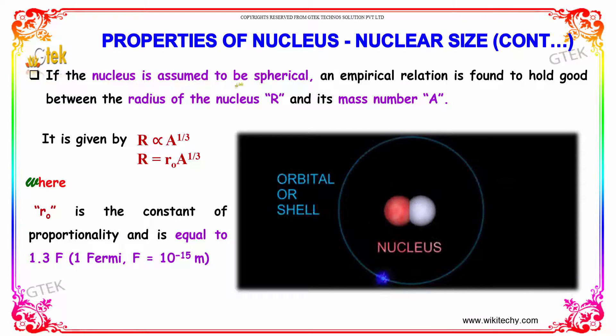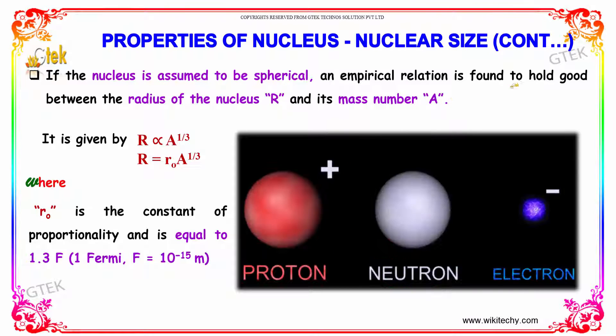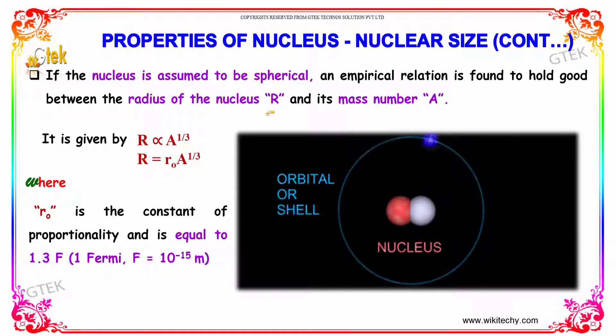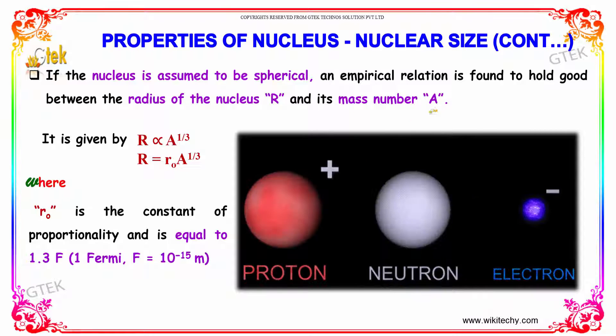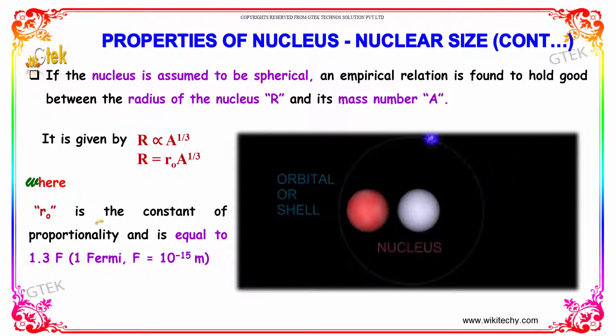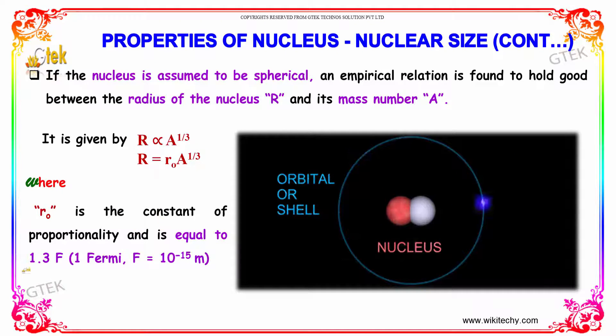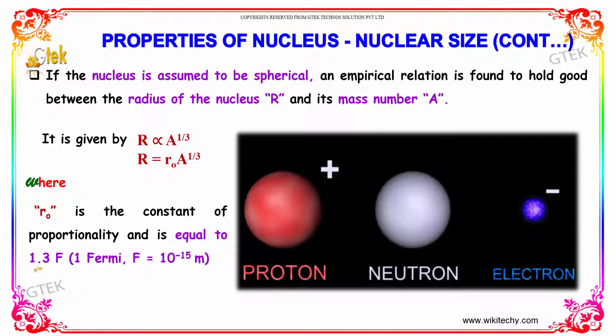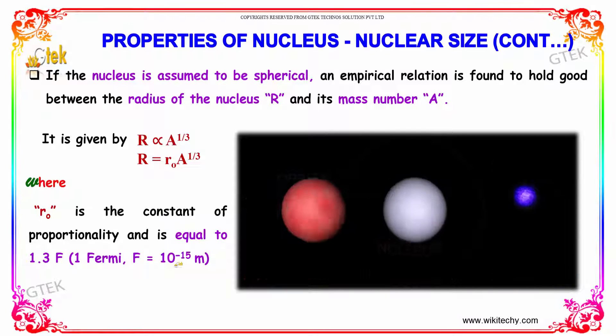If the nucleus is assumed to be spherical, an empirical relation is found to hold between the radius of nucleus R and its mass number A. It is given by R is directly proportional to A power 1 by 3, which is R equals R naught into A power 1 by 3, where R naught is the constant of proportionality and is equal to 1.3 Fermi. Fermi is 10 power minus 15 meter.